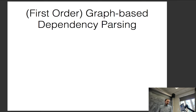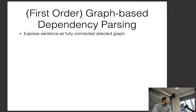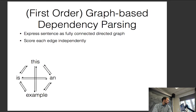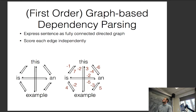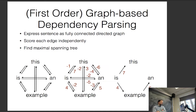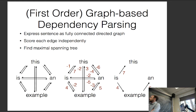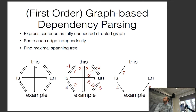In dynamic programming models, as in the reading, we calculate the probability of each edge or constituent and then do dynamic programming over these. This is first-order graph-based dependency parsing, where we express each sentence as a fully connected directed graph, score each edge independently, and then create a tree using a spanning tree algorithm. These are called edge-factored or first-order models — they calculate scores for edges independently and then calculate the tree from this.